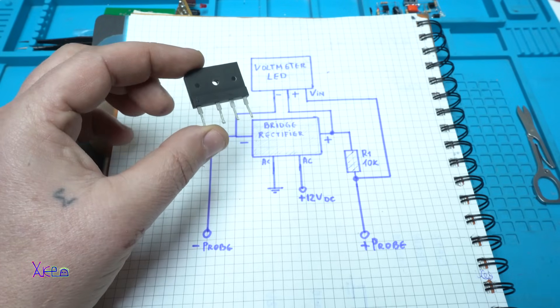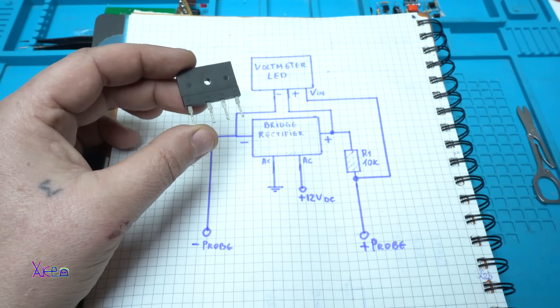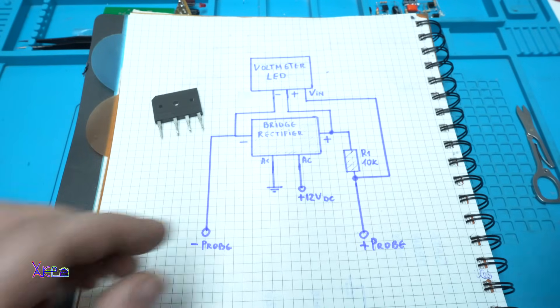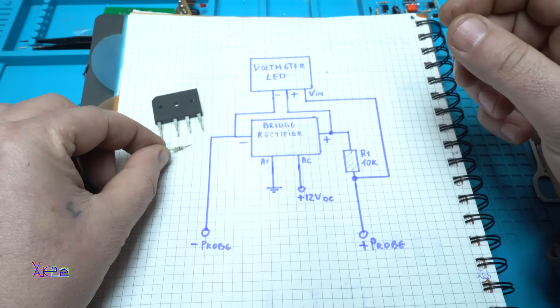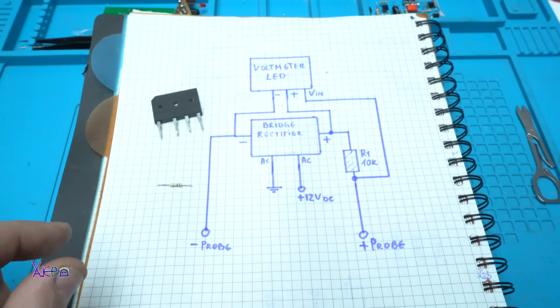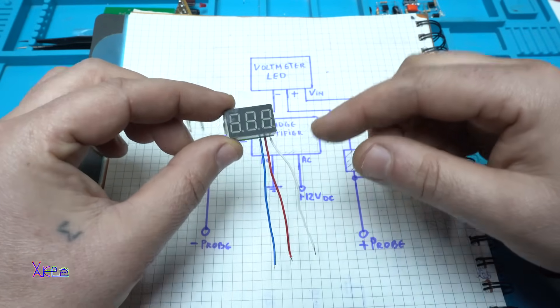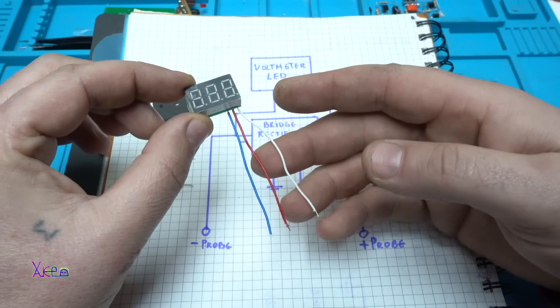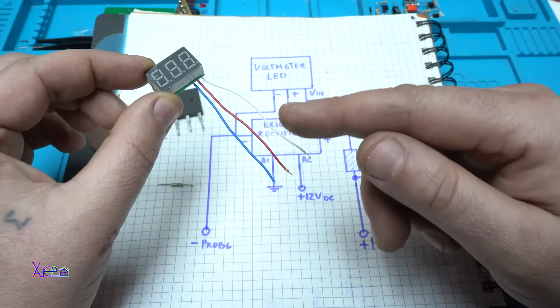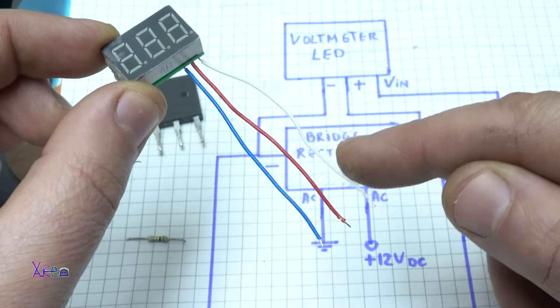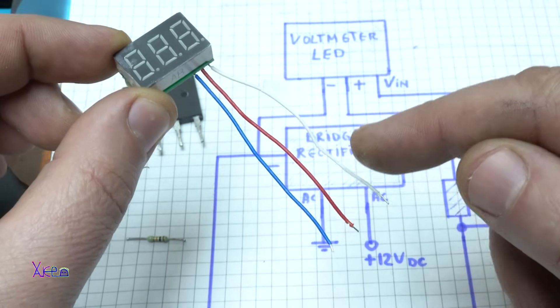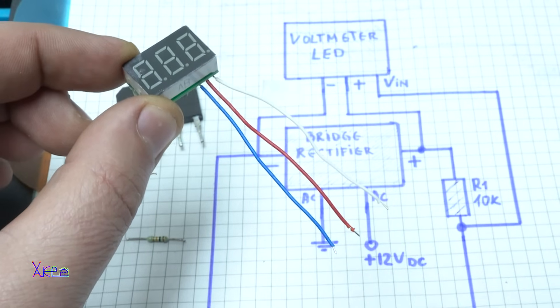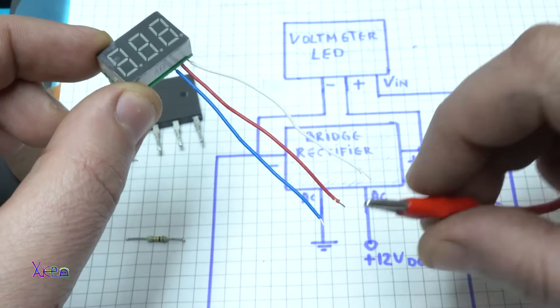This kind of electronic component - it's a bridge rectifier. One of those. You will need one 10 kilo ohm resistor and this module, it's a digital LED voltmeter with three wires: negative, positive, and a wire for measuring the voltage. On negative and positive we're gonna power it with voltage.